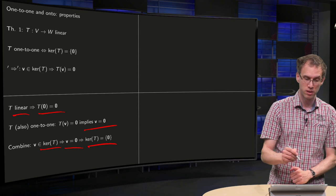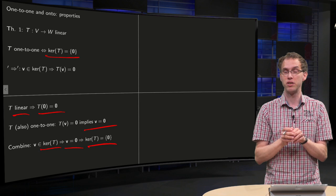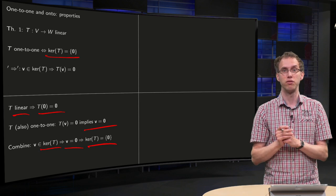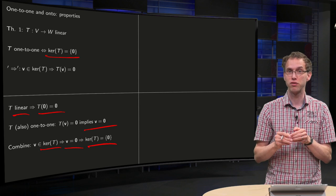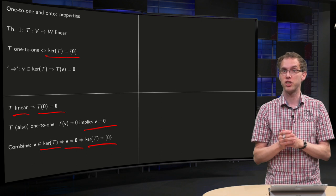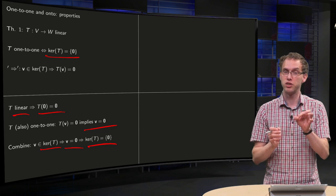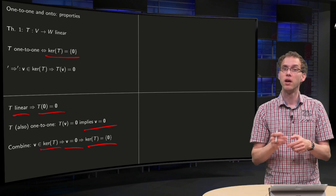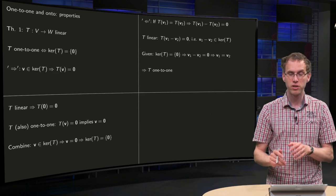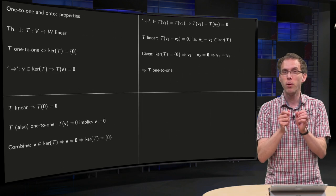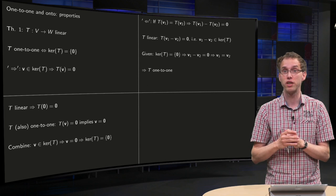Now the other way around — a bit less trivial. If your kernel is trivial, if your kernel only consists of the zero vector, then your transformation is one-to-one. This only holds, by the way, for linear transformations. For example, in calculus, F of X equals X squared: the kernel of the function is just zero, only zero maps to zero. However, if the domain is all of R, this transformation is not one-to-one. So it is quite special that knowing the kernel tells you immediately that your whole transformation is one-to-one.